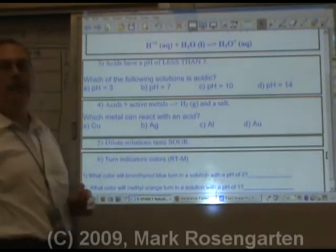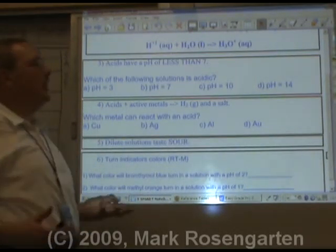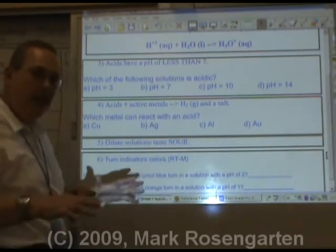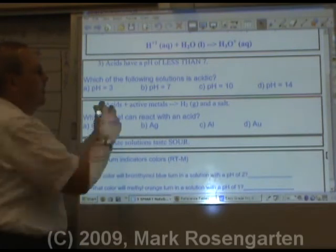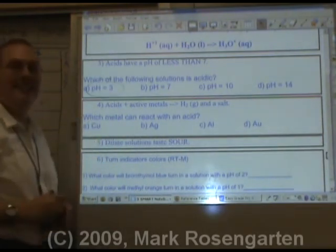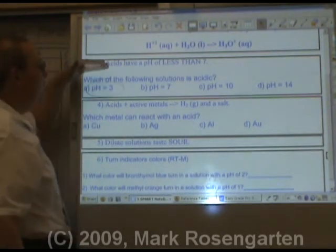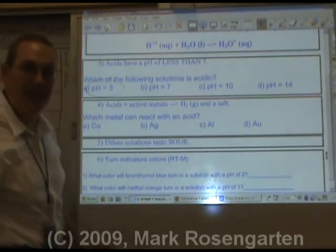Acids have a pH of less than seven. Now what pH is and how you determine it, we'll get to in a different topic. But for now, if a pH is less than seven, you're talking about an acidic solution. And the lower the pH, the stronger the acid.